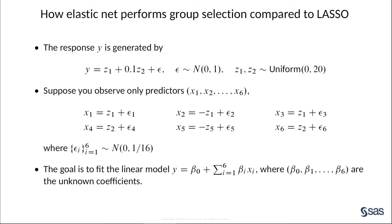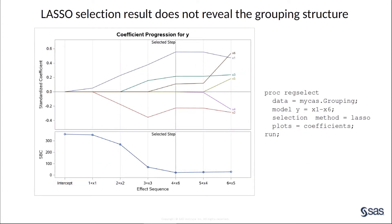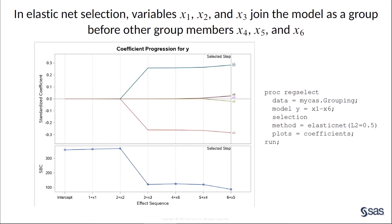The within-group correlations are almost 1 and the between-group correlations are almost 0. We will identify the relationship between the response Y and the predictors X1 through X6. A good selection procedure would identify the variables X1, X2, and X3 in the Z1 group together. This is the result of lasso selection — the group selection is not clear with the lasso method. However, in elastic net selection, you can clearly observe that X1, X2, and X3 join the model as a group and enter long before the other group members X4, X5, and X6. Also, the elastic net solution path is smoother and more stable than the lasso path.